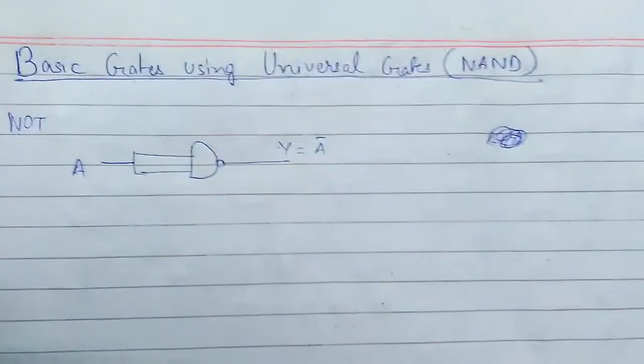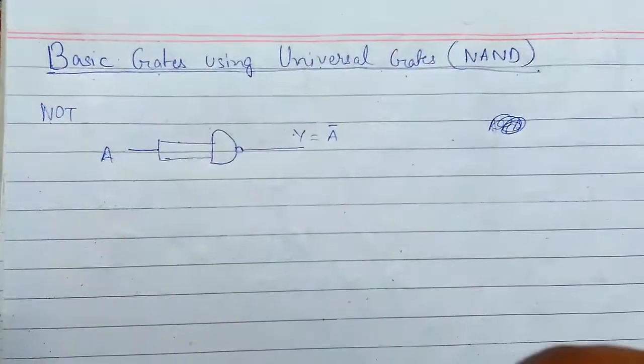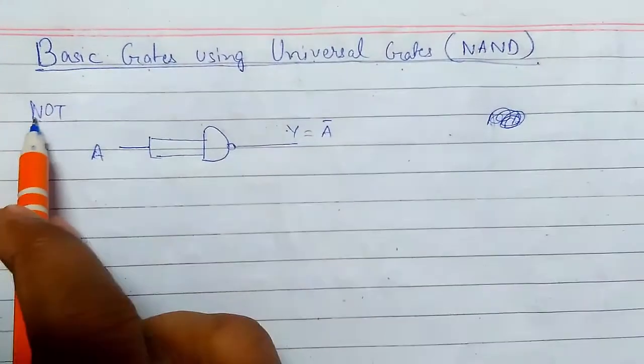First we will see the NAND gate. So we will derive NOT, AND, and OR. So first of all is the NOT gate.